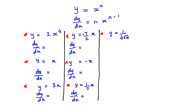Let's start differentiation. If you have y = x to the power of n, when you differentiate you write dy/dx equal to the power n multiplied by whatever number is before x. In this case we have 1, so n × 1 gives us n, and then we subtract 1 from n. For example, y = 2x to the power of 4: dy/dx = 2 × 4 = 8, and subtracting 1 from 4 gives x to the power of 3.